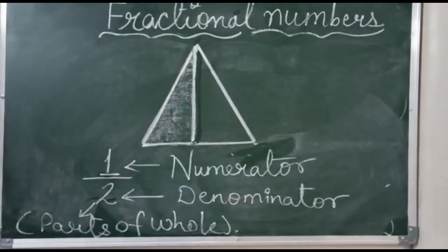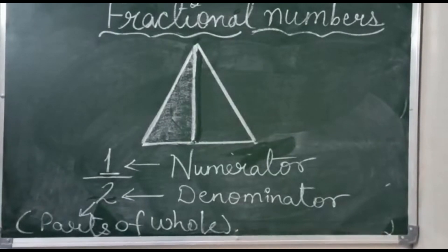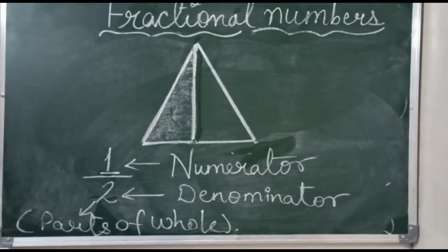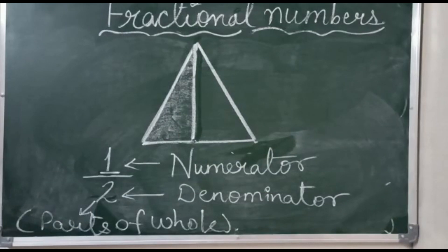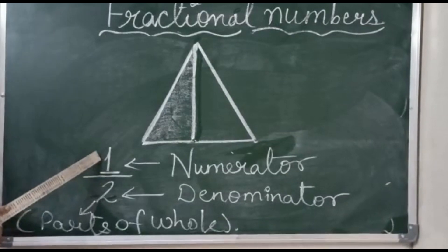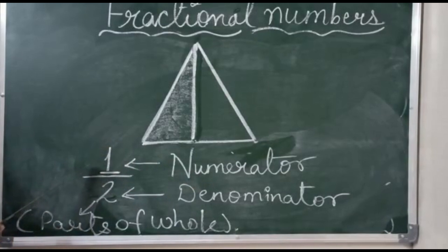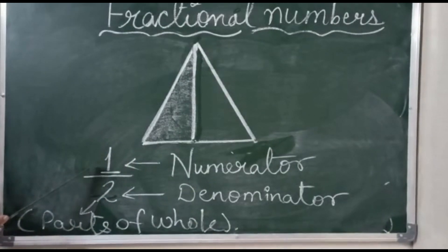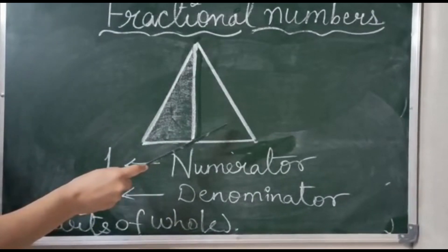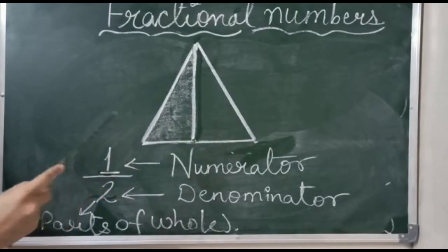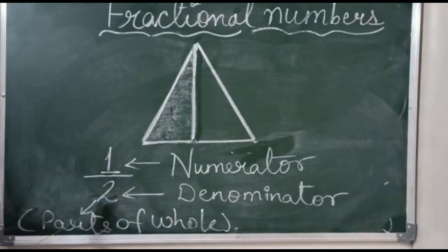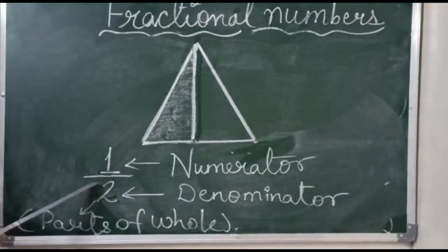By the use of an example, you can see here this is the shape of a triangle. This triangle I have divided into two equal parts. One part — that means it is the whole — we will write on the top, and this is called the Numerator. The number of parts we will write on the place of Denominator. This line is called the upon sign.